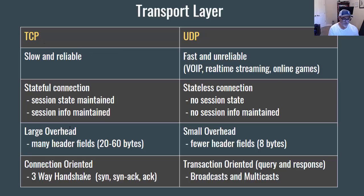TCP has a large overhead with many header fields — the TCP header can have 20 to 60 bytes. UDP has small overhead with only four header fields, and the total size is just eight bytes. So the overhead is eight bytes for UDP compared to a minimum of 20 bytes for TCP. By the way, the TCP PDU is called a segment, and the UDP PDU is called a datagram.